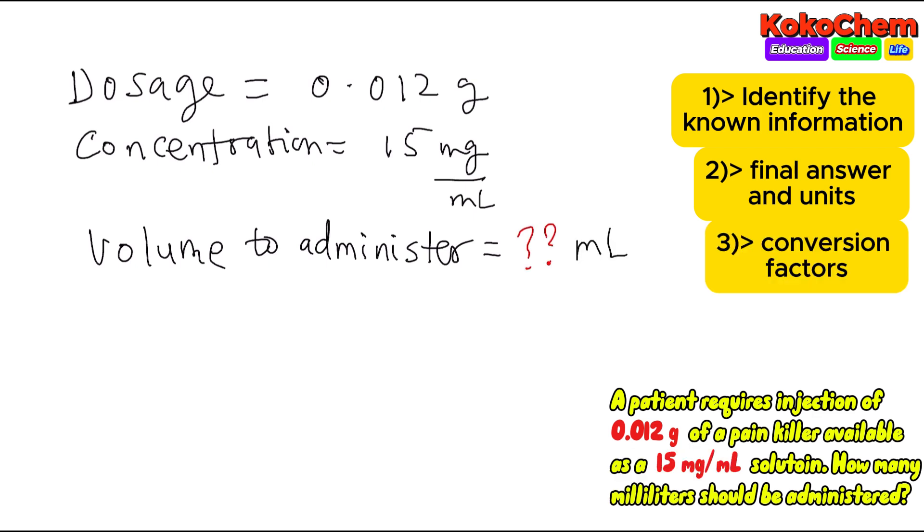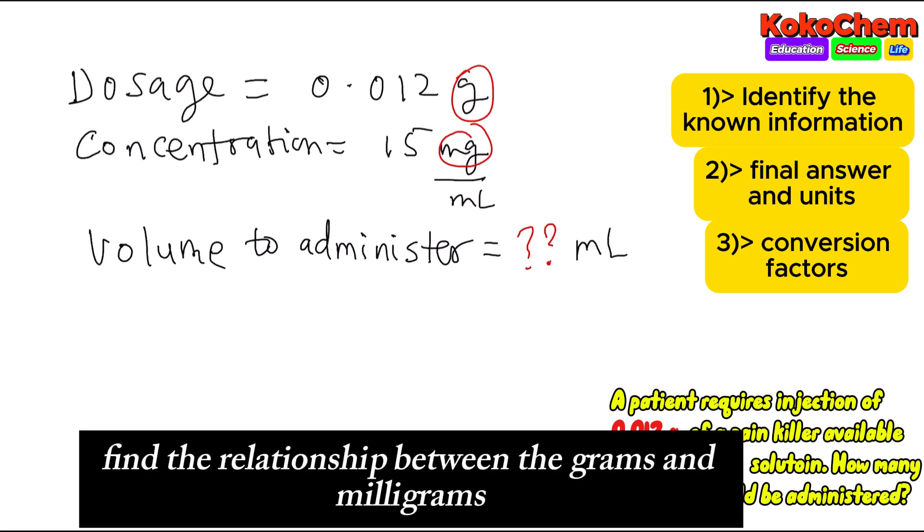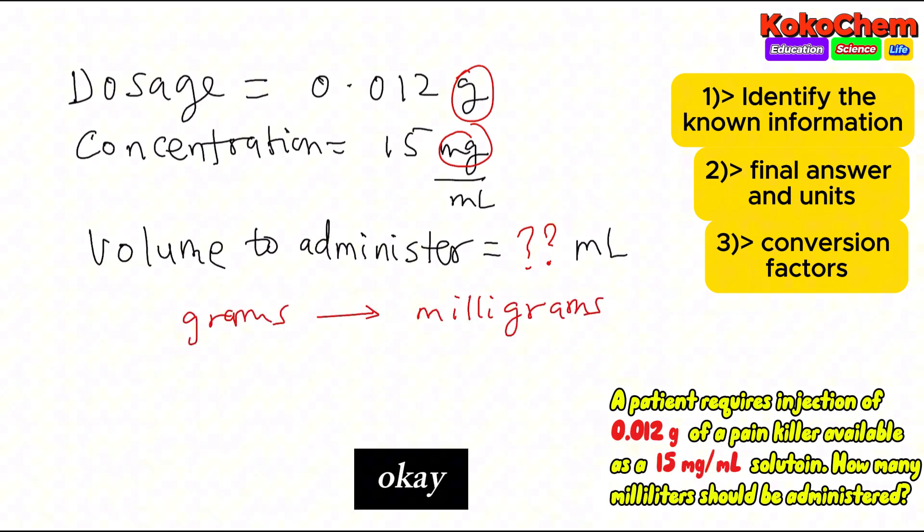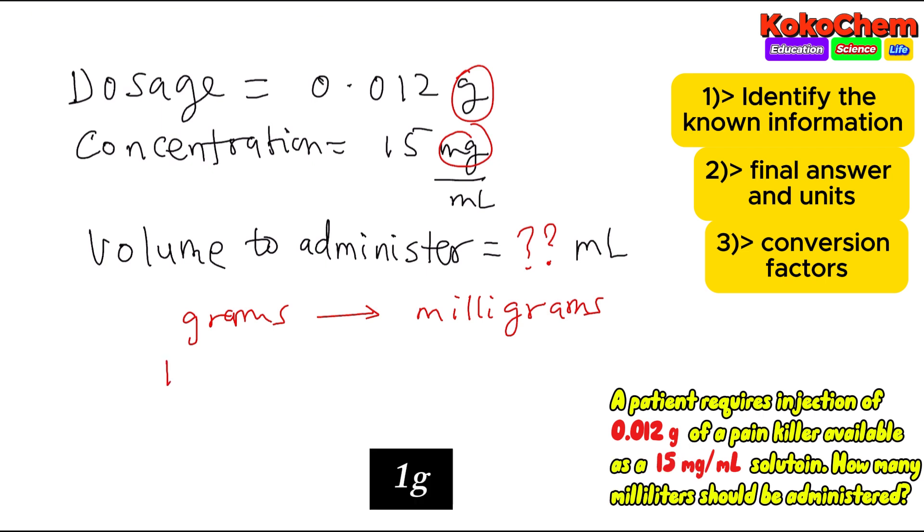Step three: identify conversion factors. In the question we have grams and milligrams, so we need to find the relationship between grams and milligrams. From our unit conversion, one gram equals one thousand milligrams.